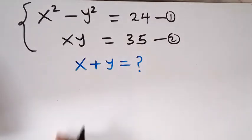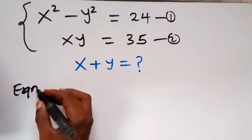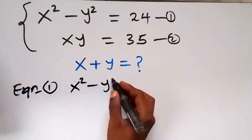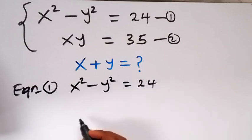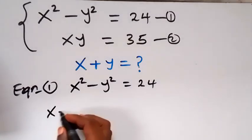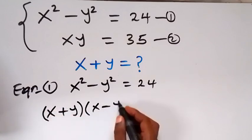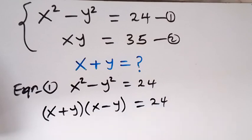From here, we are finding the value of x plus y. From equation 1, we have x squared minus y squared equals to 24. The left-hand side can be written as x plus y, multiplied by x minus y, which equals 24. This is the difference of two squares.